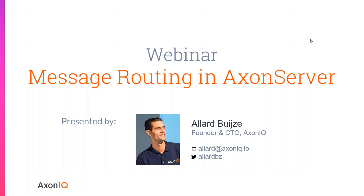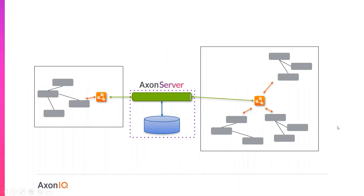Welcome to this webinar about message routing in Axon Server. A few weeks ago there was a related webinar about event storage, so if you're interested in seeing more details of that you can check out the recording. This time we're going to focus more on the messaging itself and how Axon Server helps messages get from their origin to their destination.